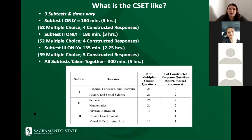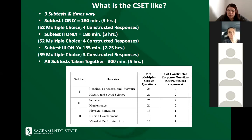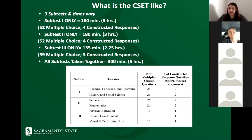CSET has three subsets. For Subtest Three — physical education, human development, and visual and performing arts — each area has 13 multiple choice questions and one constructed response. Subtest Three is two hours and 25 minutes, which is shorter than the other two subtests.